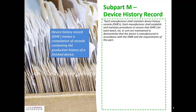So, device history record — what is it? A device history record means a gathering of records containing the production history of a finished device. It states in the regulation that each manufacturer shall maintain device history records, and each manufacturer shall establish and maintain procedures to ensure that the DHRs for each batch, lot, or unit are maintained to demonstrate the device is manufactured in accordance with the device master record and the requirements of the part.